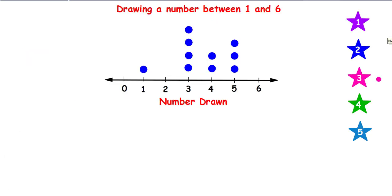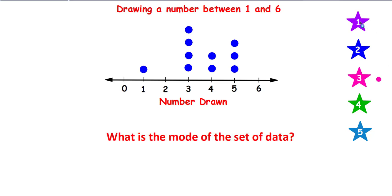We're going to work with this line plot or dot plot — whichever one they want to call it this year. I'm going to give you the question; you pause it and see if you get the answer right before you check it. What is the mode of the set of data? The mode is the number that's listed the most — it's where the data peaks. So your mode is 3.